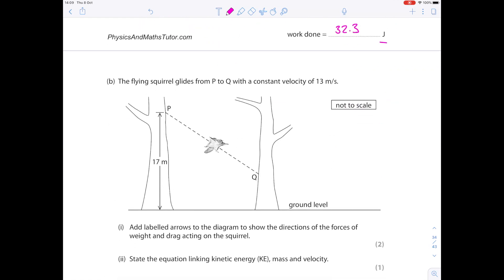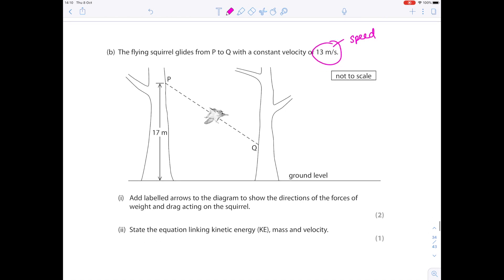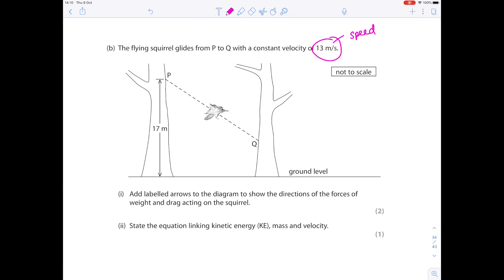The flying squirrel glides from P to Q with a constant velocity of 13 meters per second. Add labeled arrows to the diagram to show the directions of the forces of weight and drag acting on the squirrel. Well remember weight always acts down. Drag acts against the motion so it acts in this direction here.